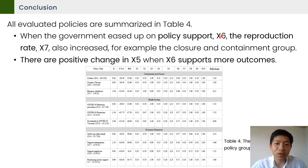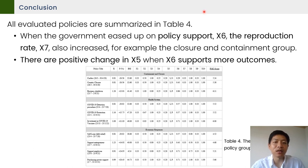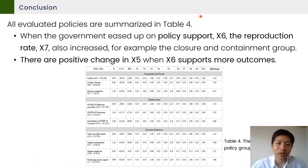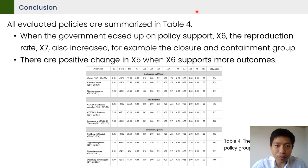All policies are evaluated and summarized in table 4. Significantly, we can notice that when the government adds policy support, x6, the reproduction rate or infection rate x7 also increases. The containment and closure group is particularly sensible. There is also a positive change of stock market x5 when x6, or policy support, has more support fields defined, and this relationship is relative — the last positive is when x6 is higher.